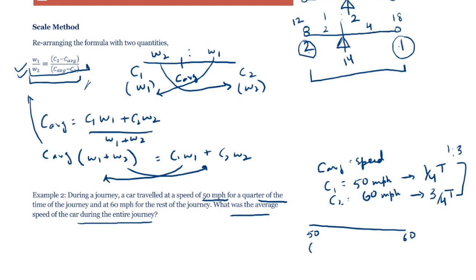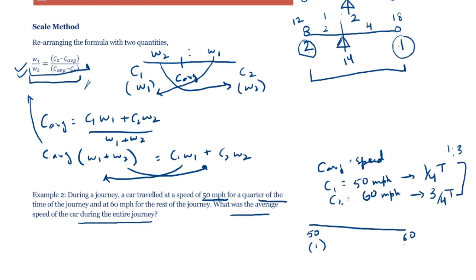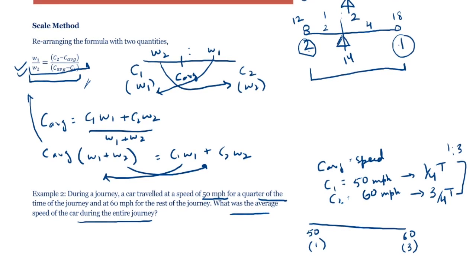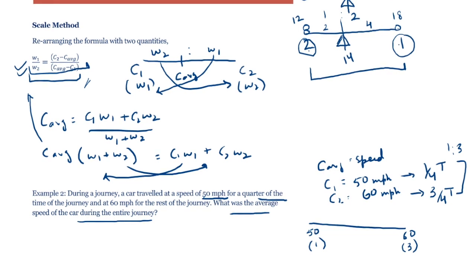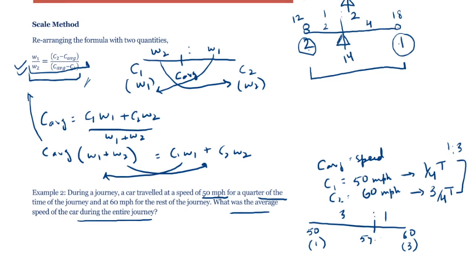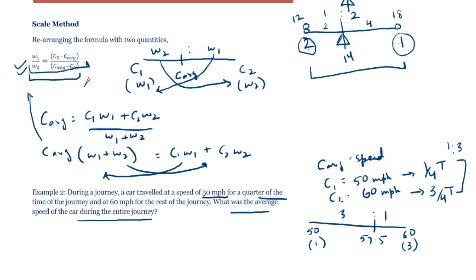If I were to draw that scale, I would say this is 50, this is 60. The weight given to 50 is 1 and the weight given to 60 is 3. We just need the ratios. Then this entire distance between 50 and 60, that is 10 mph, will be divided in the ratio 3 is to 1. So my average will lie at 57.5.